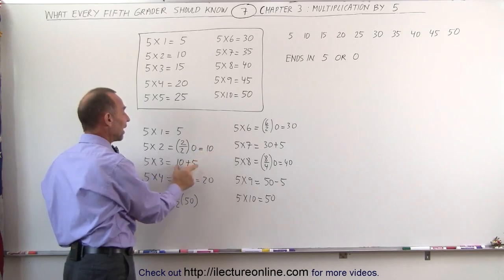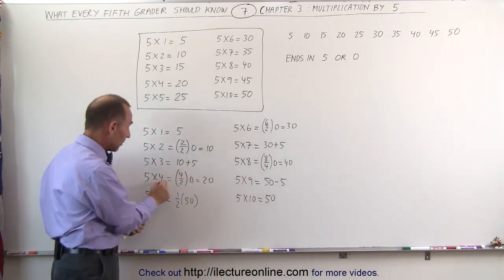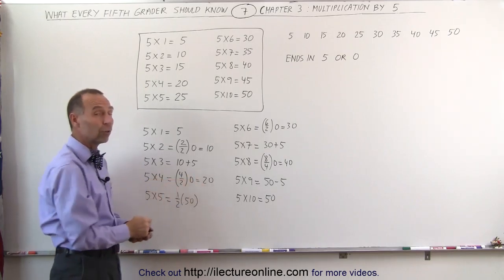5 times 3 is simply the previous answer, add 5 to it. 5 times 4, again, you take the number 4 divided by 2, half of 4 is 2, add a 0, you get 20.